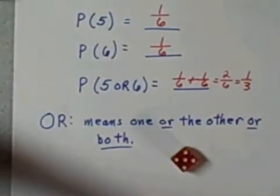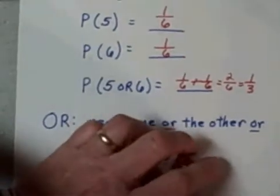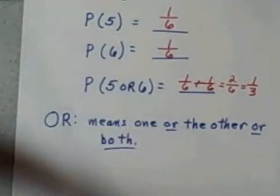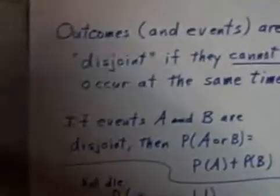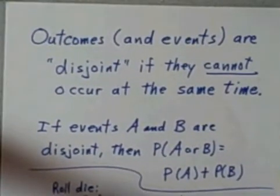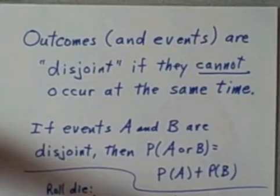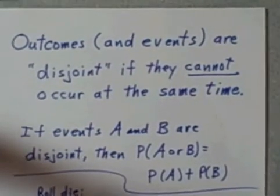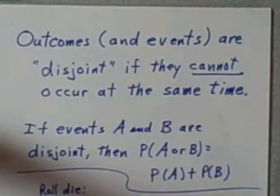We have a special term for that when we have outcomes that just cannot happen at the same time. Outcomes and events are called disjoint if they cannot occur at the same time, such as rolling a five, a six. It cannot happen.